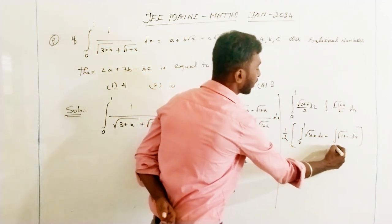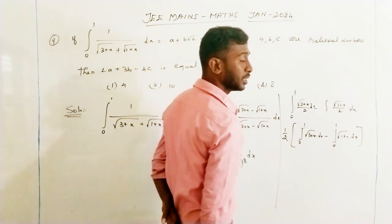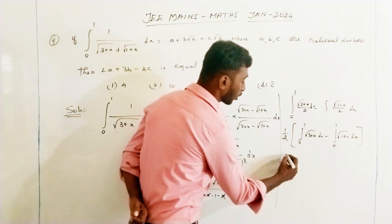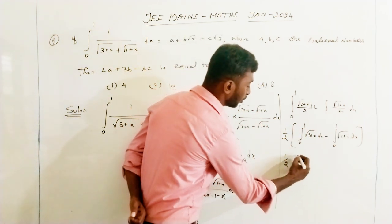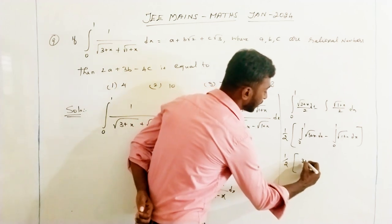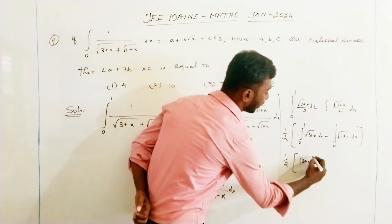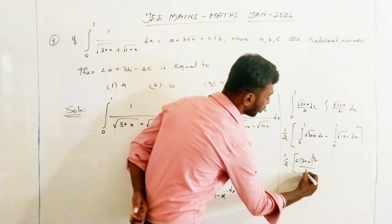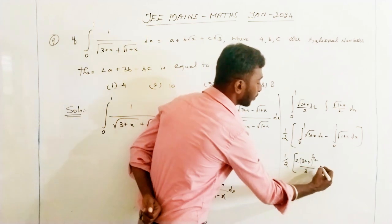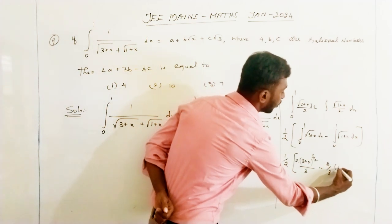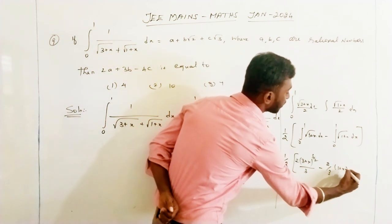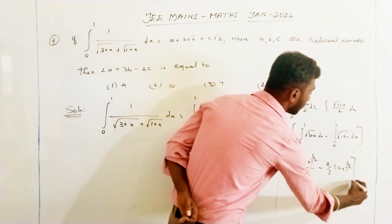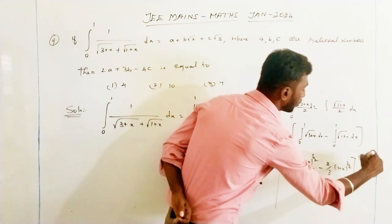With the limits 0 to 1, we integrate using the power rule. The integral of (3+x) to the power 1/2 gives (3+x) to the power 3/2 divided by 3/2, which becomes 2/3. Similarly, minus 2/3 times (1+x) to the power 3/2, evaluated from 0 to 1.